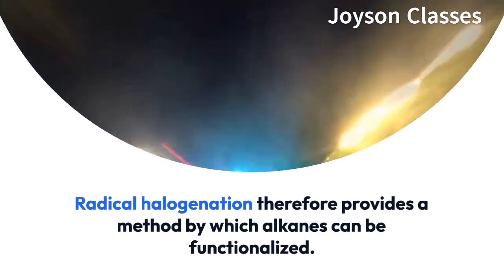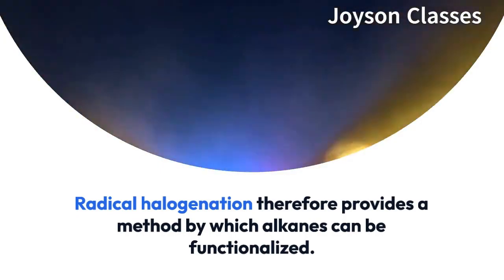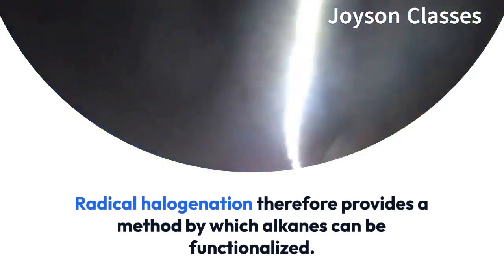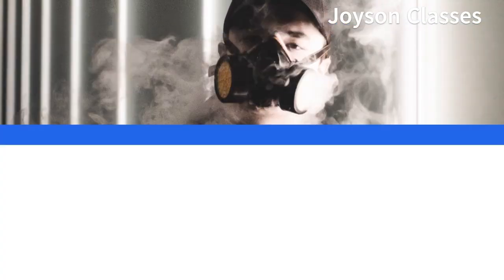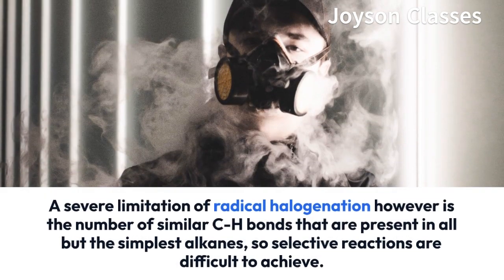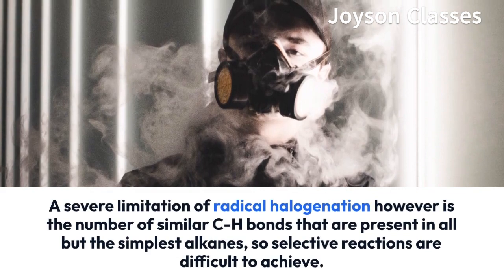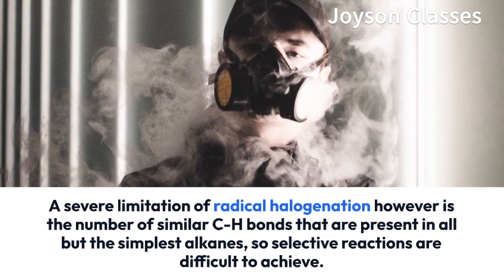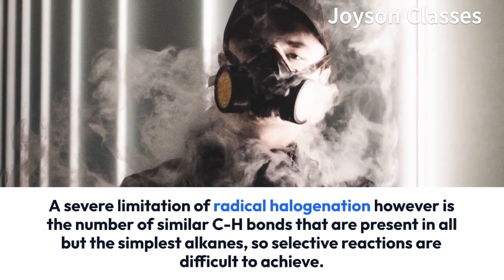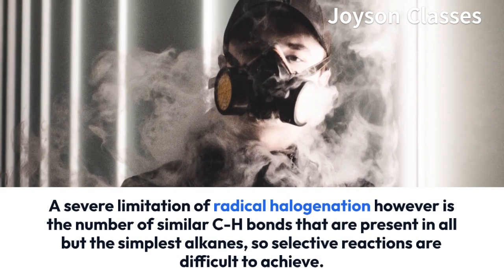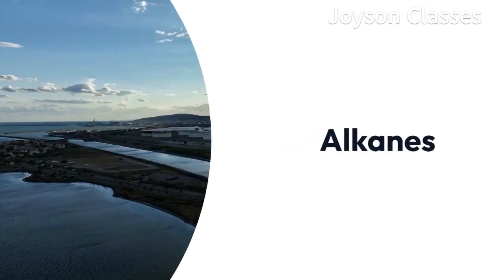A severe limitation of radical halogenation, however, is the number of similar C-H bonds that are present in all but the simplest alkanes, so selective reactions are difficult to achieve.